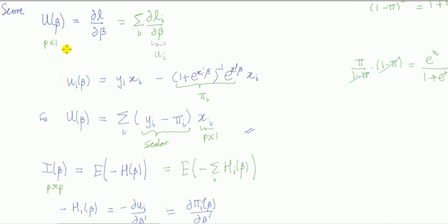I check that my dimensions make sense, because the score is a p by one vector, p stands for number of coefficients, beta vector. This here, yi is a scalar, pi_i is a scalar, and xi is a vector. It's a p by one vector, so it matches.